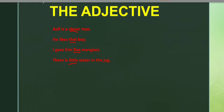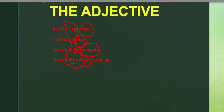These are all used as adjectives because after them there comes a noun: man, boy, mangoes, and water. So 'clever,' 'that,' 'five,' and 'little' are all expressing or modifying the noun.